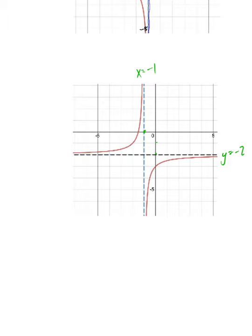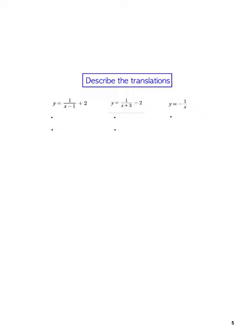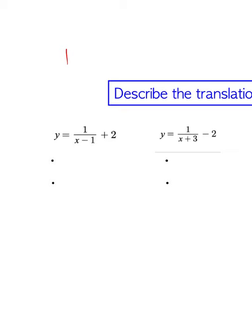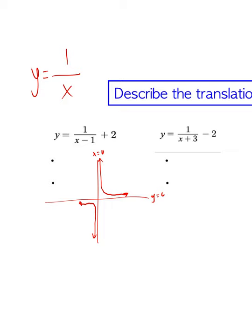Now transitioning into the translation side. When we look at a graph of y equals 1 over x — the typical parent function — its asymptotes are on the axes: the vertical asymptote at x equals 0 and the horizontal asymptote at y equals 0. Now we're going to look at what happens when we add a minus 1 in the denominator, and then what happens when we add a plus 2 outside.